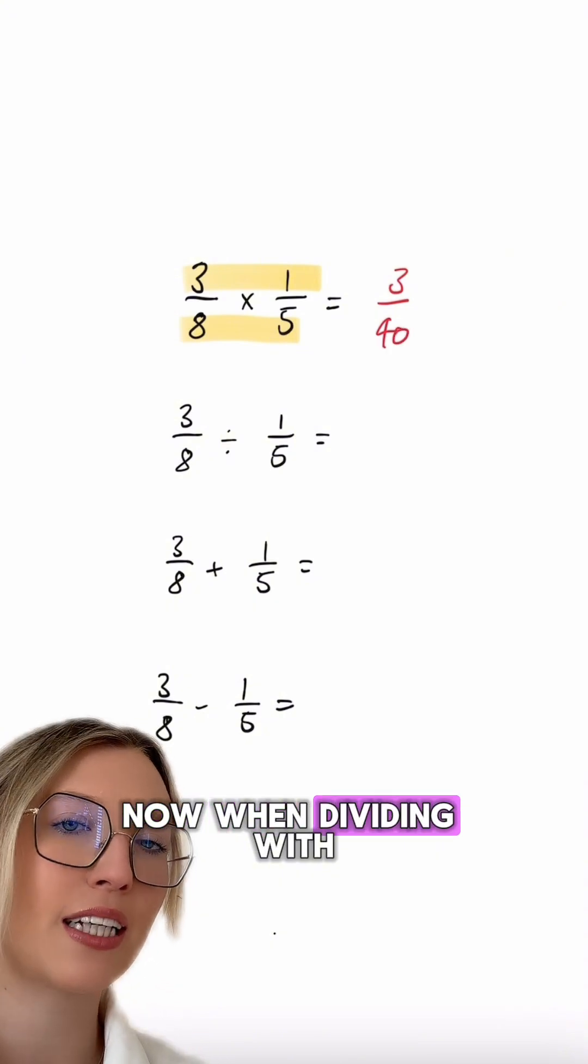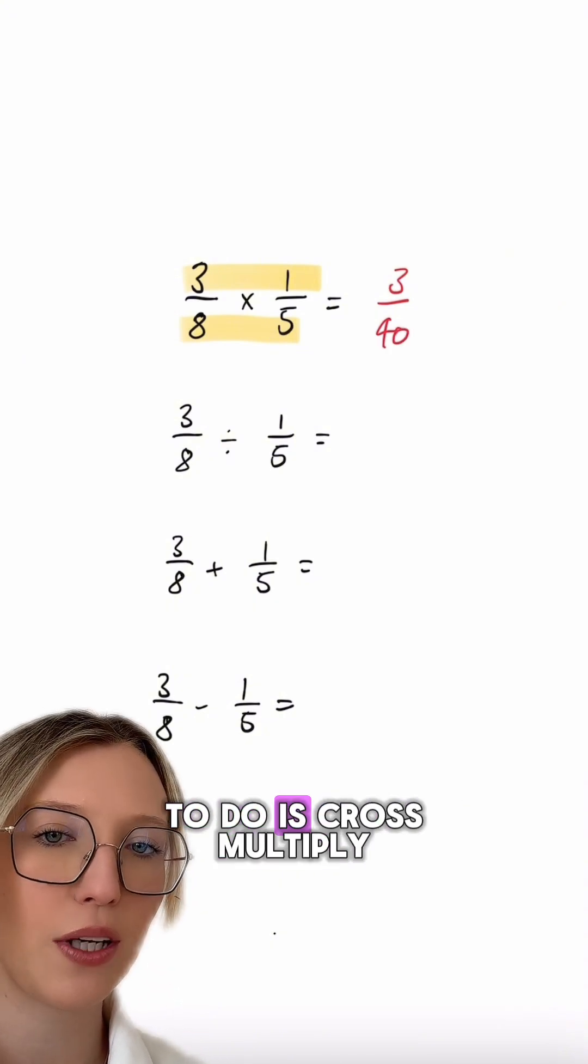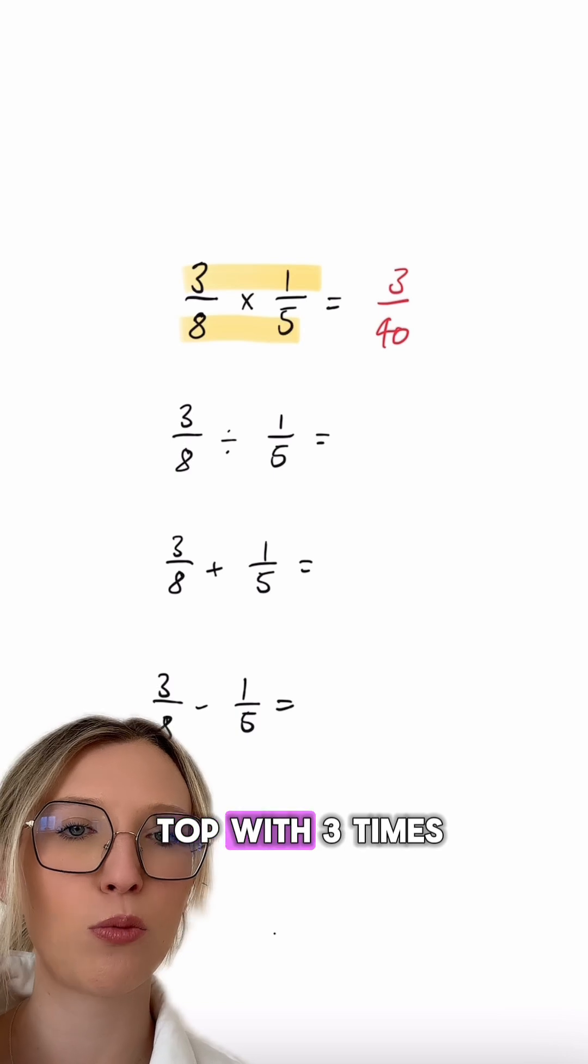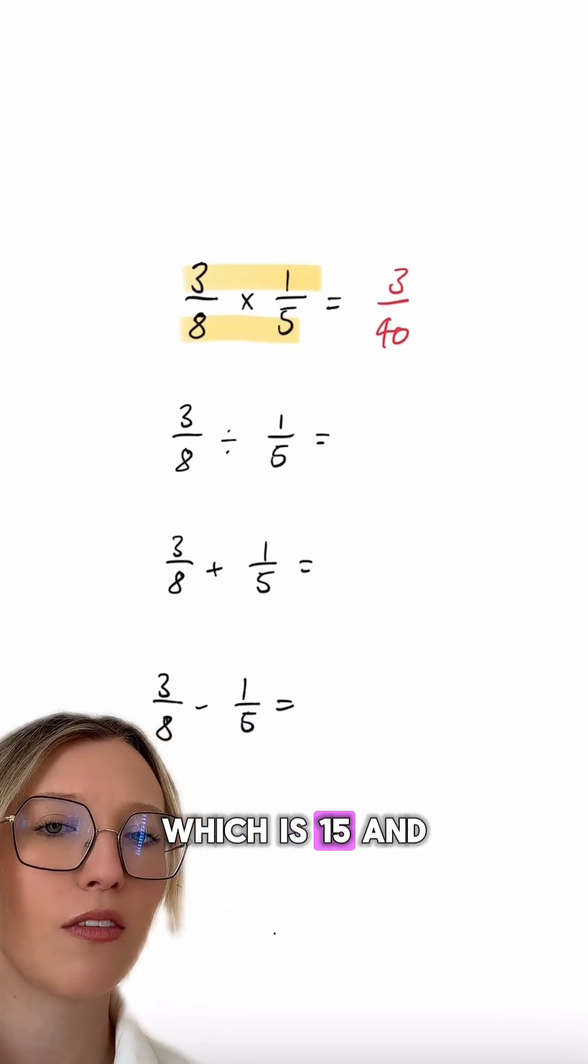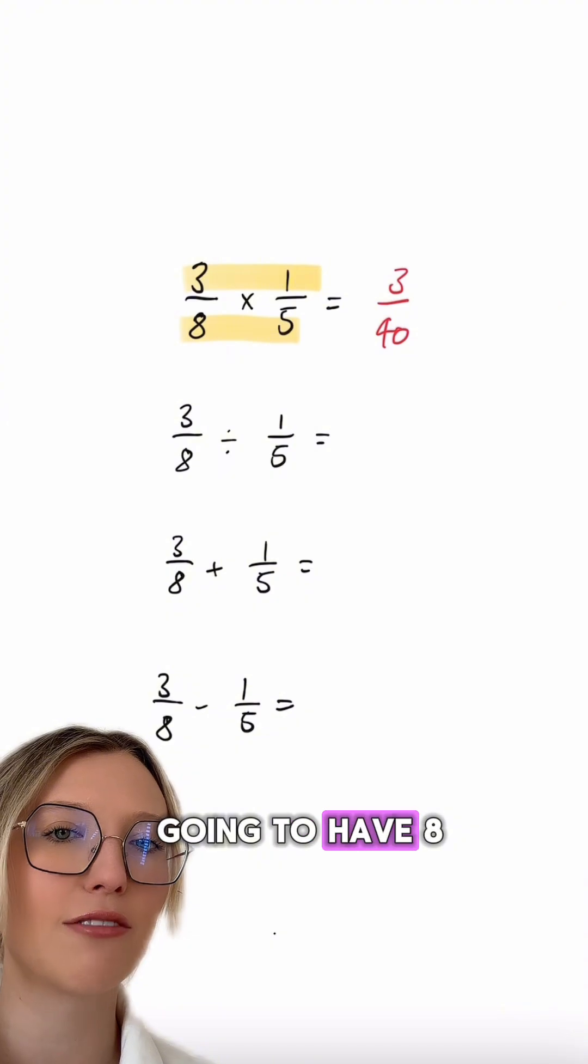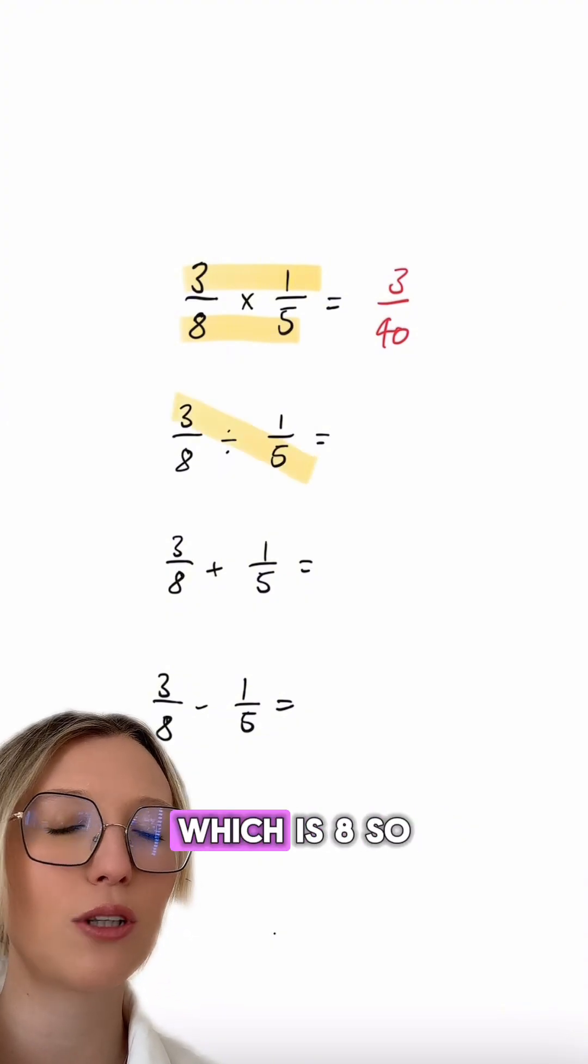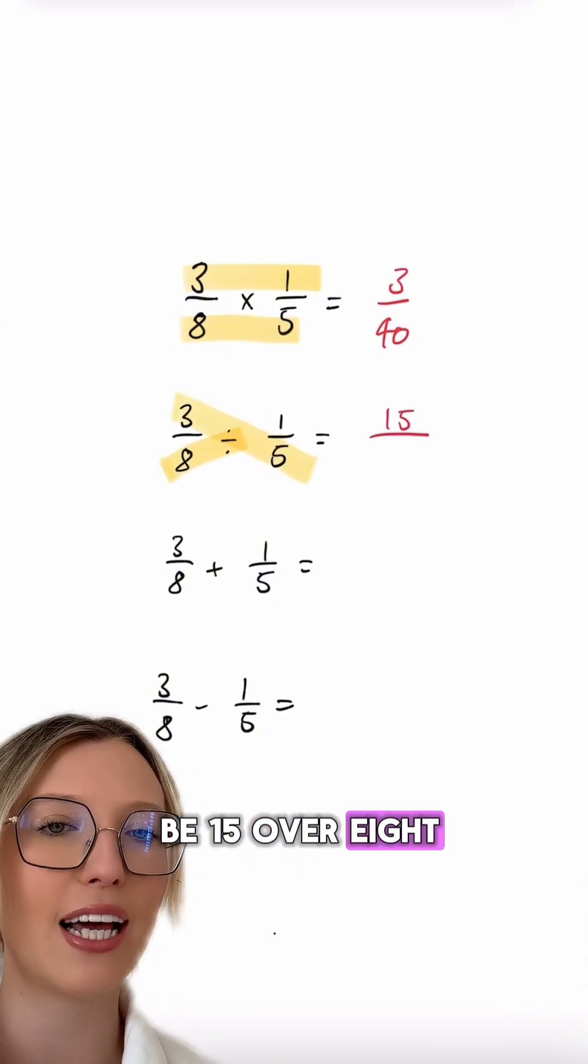When dividing with fractions, all you need to do is cross multiply. So we're going to be left on the top with 3 times by 5, which is 15. And on the bottom, we're going to have 8 times by 1, which is 8. So our answer here would be 15 over 8.